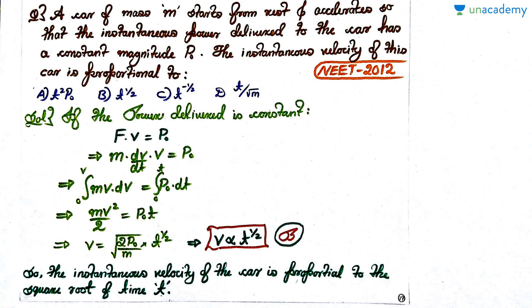Let's see this last question and I would like to emphasize on it because it's very important. You'll find many questions which have been asked in pre-medical and AIEEE exams when the power delivered is constant. This category of questions is very important. A car of mass M starts from rest and accelerates so that instantaneous power delivered to the car has a constant magnitude P₀. What they have asked is: instantaneous velocity of this car is proportional to what? If the power is constant, they want to know how velocity is related to time. Pause the video, attempt the question.